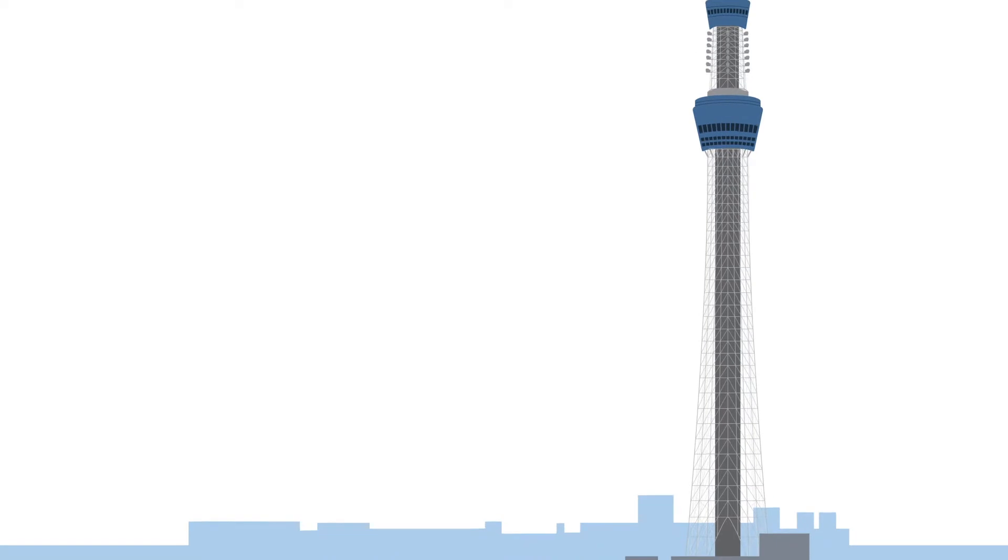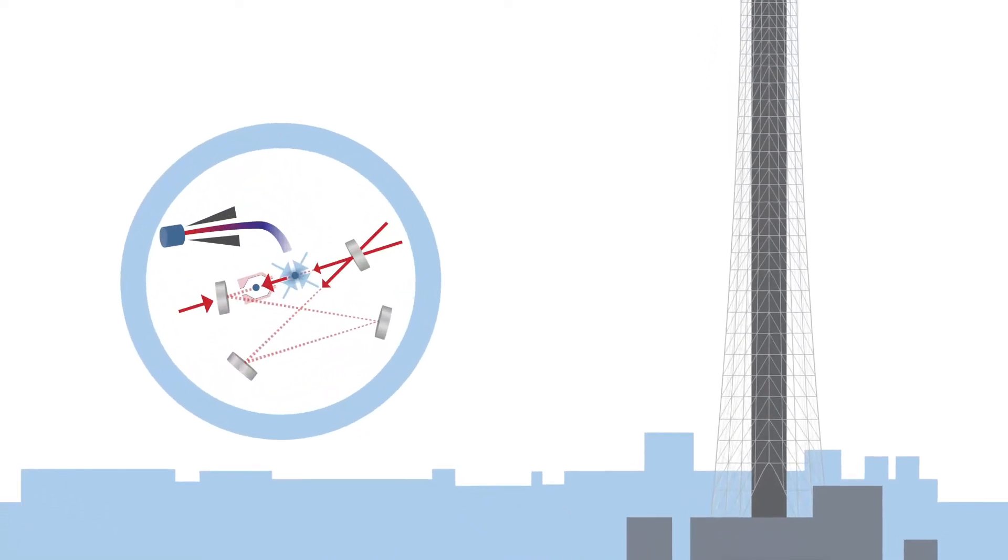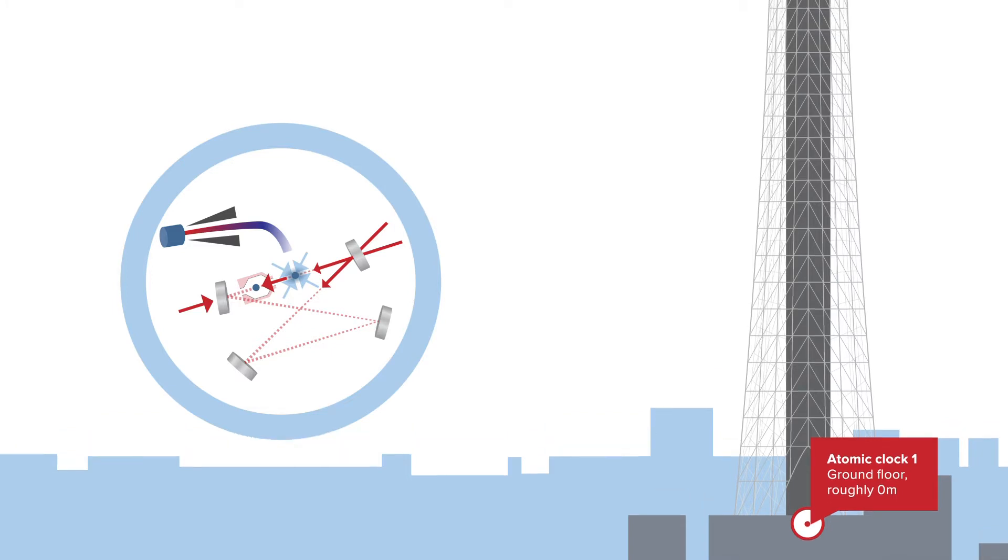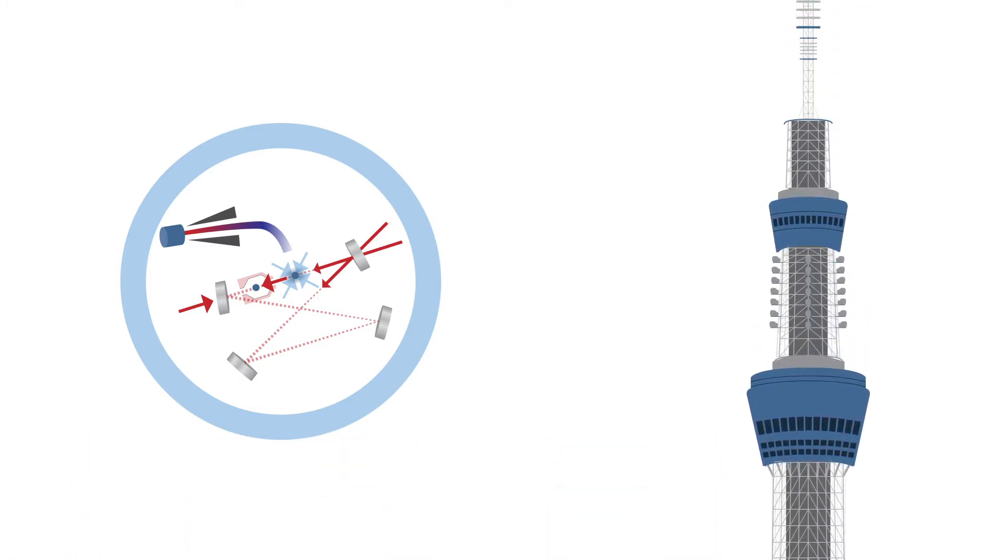And this time, they've done it using a pair of ultra-precise clocks spaced 450 meters apart, one on the ground and the other in the observatory floor of Tokyo Skytree, one of the tallest towers in the world.